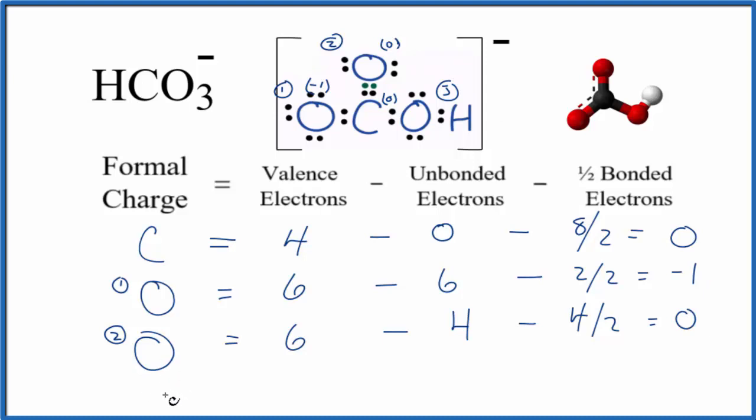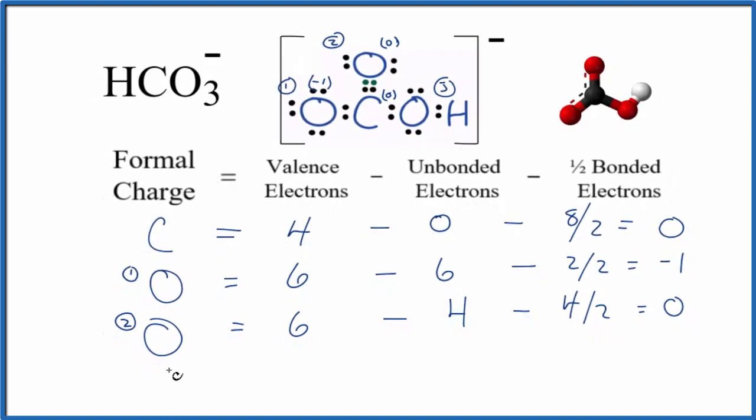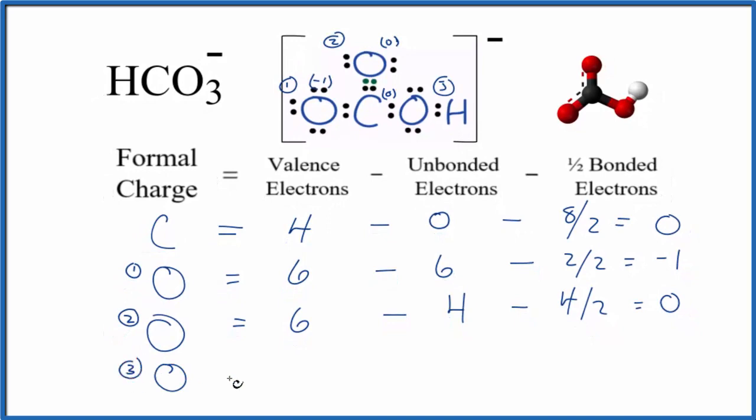Finally, for the last oxygen here, what we're calling oxygen three: six because it's oxygen, unbonded two, four, and then bonded two, four, so we have four over two. And again we end up with zero.